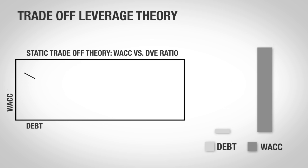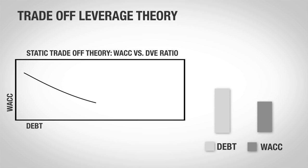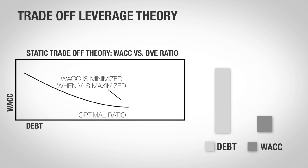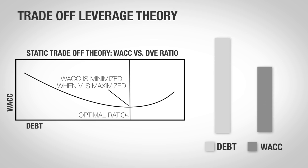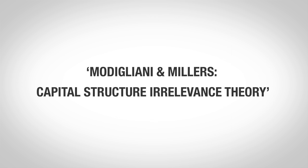The effect on the WACC is that the closer the company gets to bankruptcy, the higher the bankruptcy costs become, and therefore the costs of debt finance start to increase the WACC. Now that you understand the basic theory behind Modigliani and Miller's capital structure hypotheses, please complete the self-assessment to test your understanding.